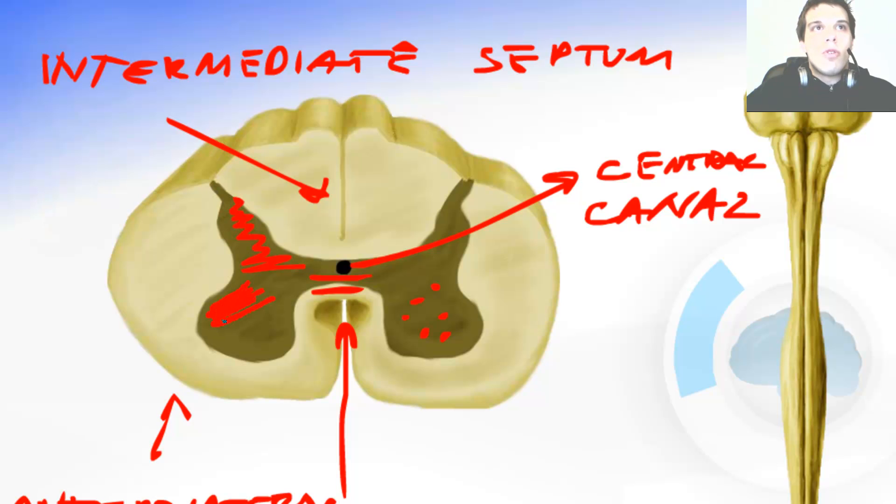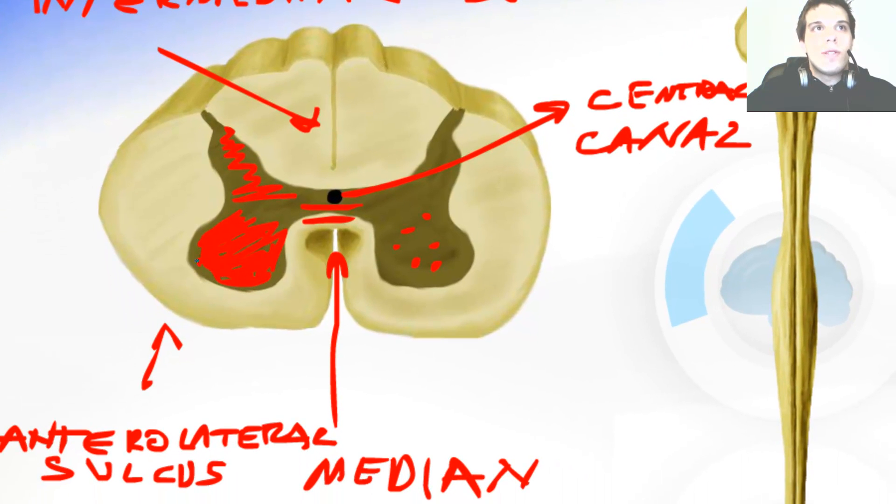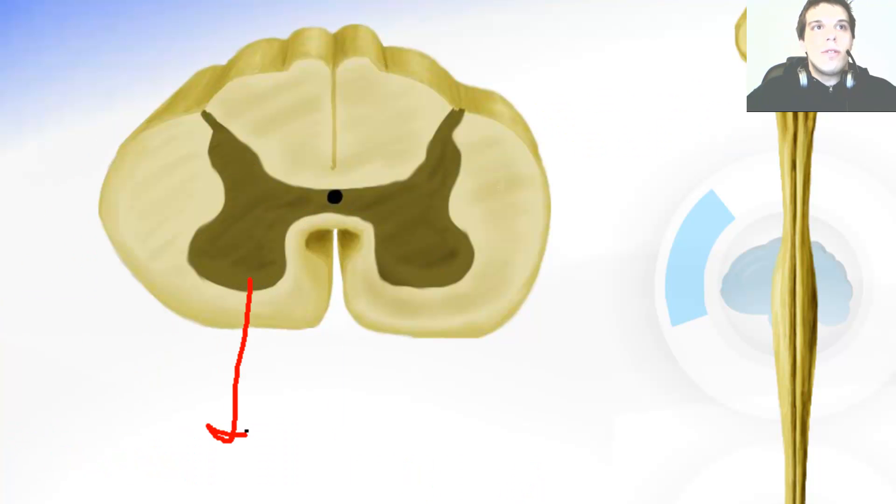This part over here is the motor horn or the anterior horn of the spinal cord gray matter. The motor neurons send their axons through the anterolateral sulcus here and they join with the sensible root of the spinal nerve and they create the spinal nerve. So we have the anterior horn and we have the posterior horn.